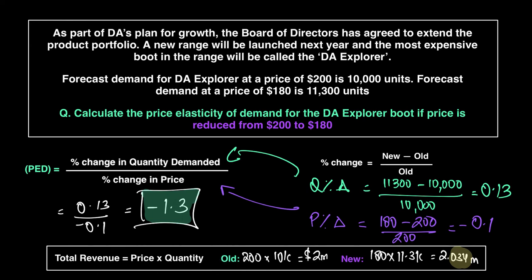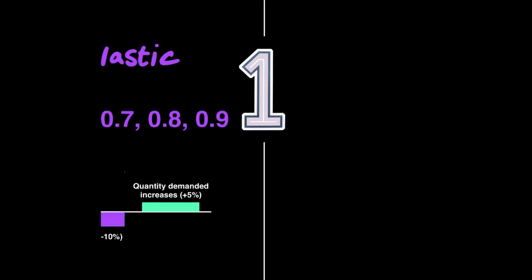So they stand to make about thirty-four thousand dollars more by reducing the price to one hundred and eighty dollars. Whichever strategy gives the higher total revenue is the right choice. In this case, it may be better to reduce the price and sell more units. The DA Explorer had a PED of 1.3 — but what does that number actually mean?